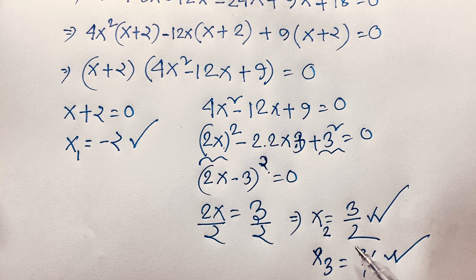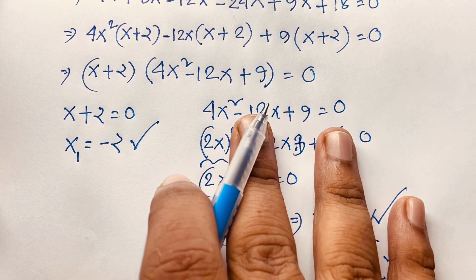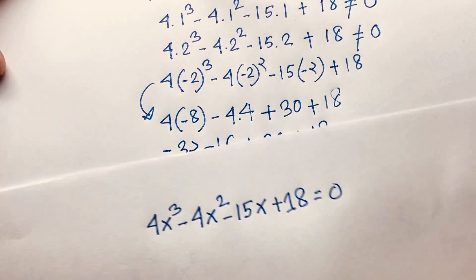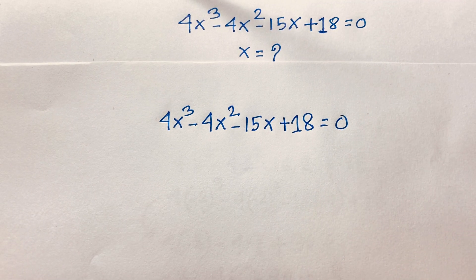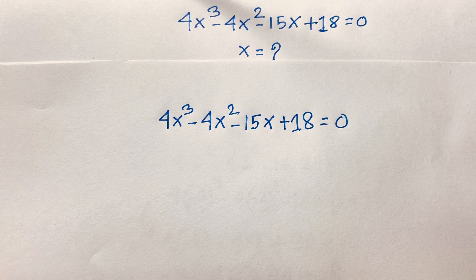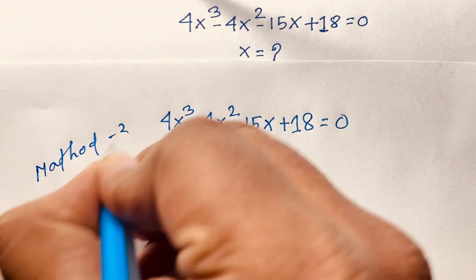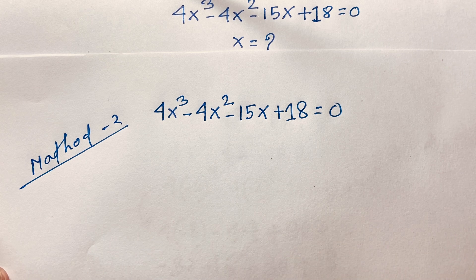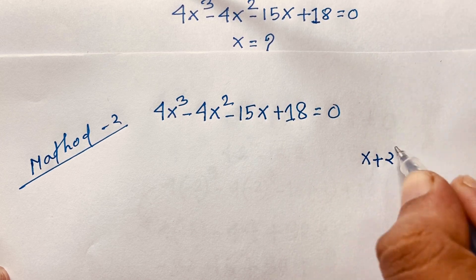Now I solve the same question using Method 2. Our equation remains 4x³ − 4x² − 15x + 18 = 0. Since x = −2 is a root, (x + 2) is a factor, and we divide the cubic by (x + 2).